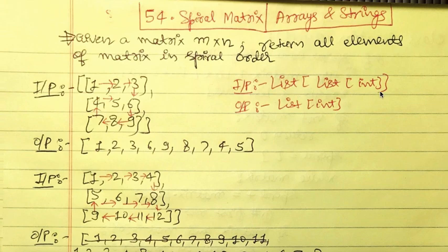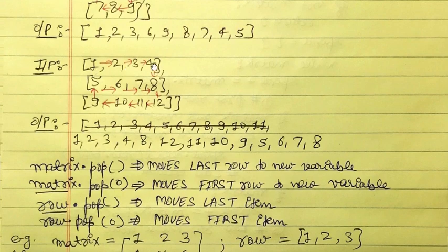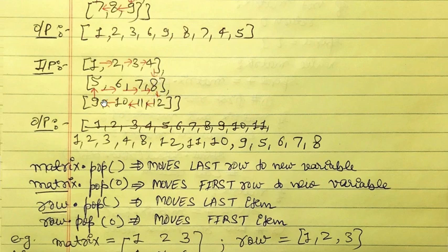The input is a list of list of integers and the output is just a one-dimensional list: one two three six nine eight seven four five. Another example is a 3x4 matrix — first row one two three four, second row five six seven eight, third row nine ten eleven twelve. The spiral order is one two three four, then eight twelve, then eleven ten nine, then five six seven.